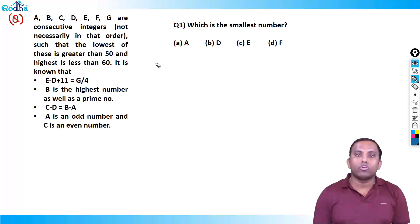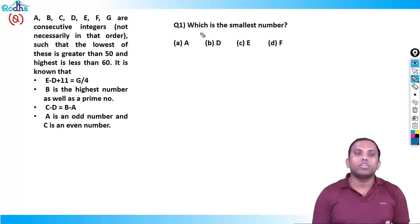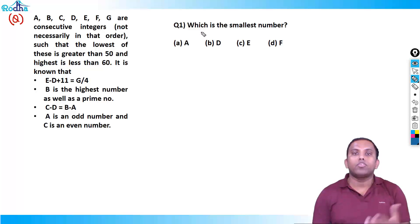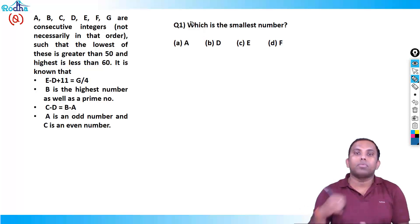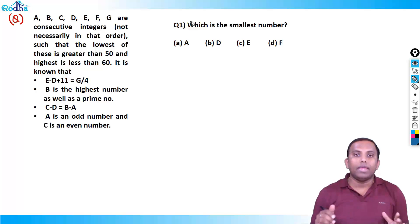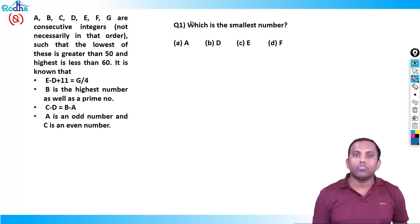We have four questions to follow: which is the smallest number, what is the value of D plus F, what is the value of C, and so on. Basically, the ultimate aim is to find all the values of A, B, C, D, E, F, and G.